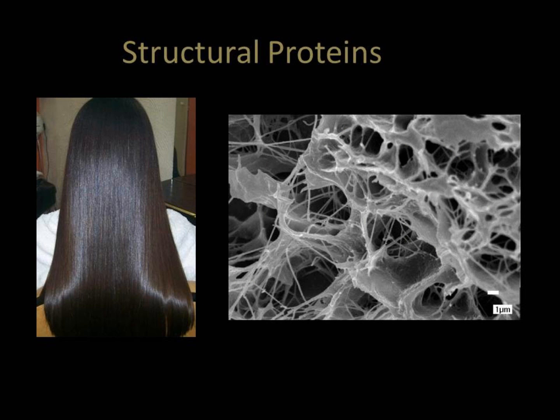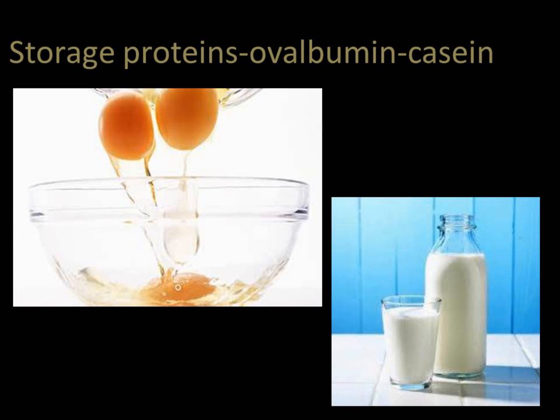Structural proteins are fibrous and stringy and provide support. Examples include keratin, collagen, and elastin. Keratin is found in protective coverings such as hair, quills, feathers, horns, and beaks. Collagen and elastin provide support for connective tissues such as tendons and ligaments.